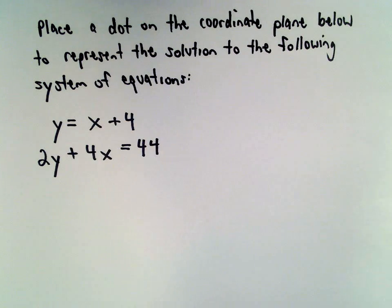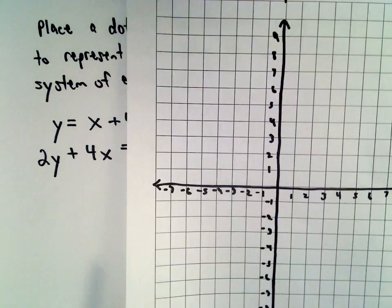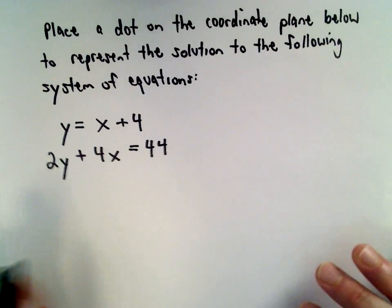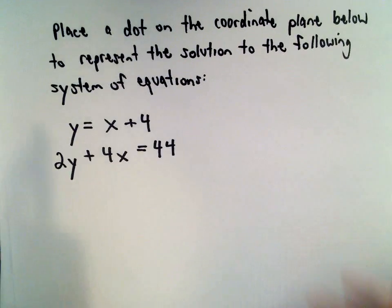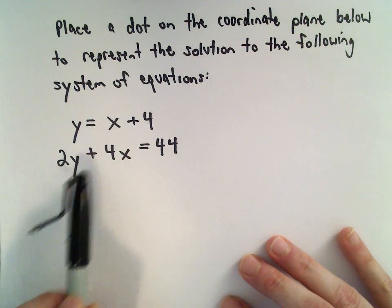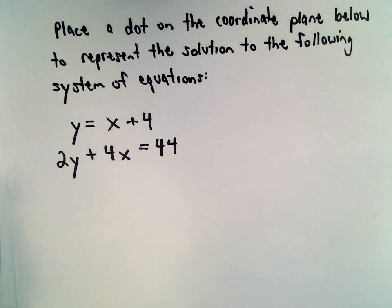In this example, we're going to place a dot on the coordinate plane to represent a solution to the following system of equations. We have y equals x plus 4, and then we have the equation 2y plus 4x equals 44.